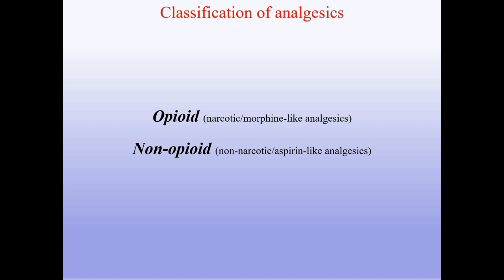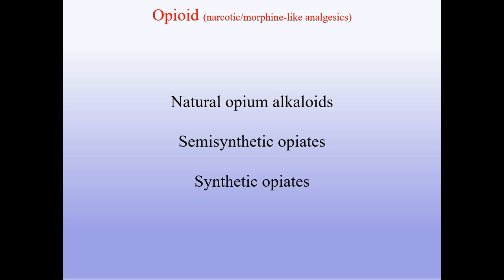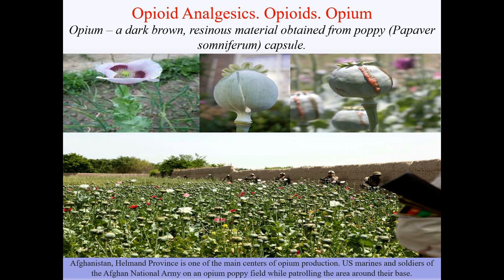Opioid, narcotic, morphine-like analgesics are subdivided into natural opium alkaloids, semi-synthetic opiates, and synthetic opiates. Opium is the dark brown resinous material obtained from the poppy papaver somniferum capsule. Images show opium and its production in Afghanistan's Helmand province, one of the main centers of opium production, where U.S. Marines and soldiers of the Afghan National Army patrol opium poppy fields.